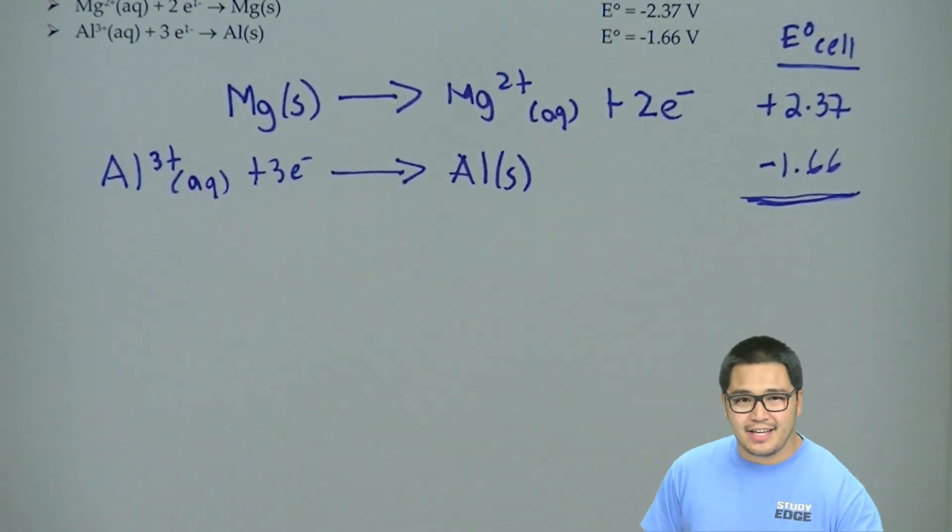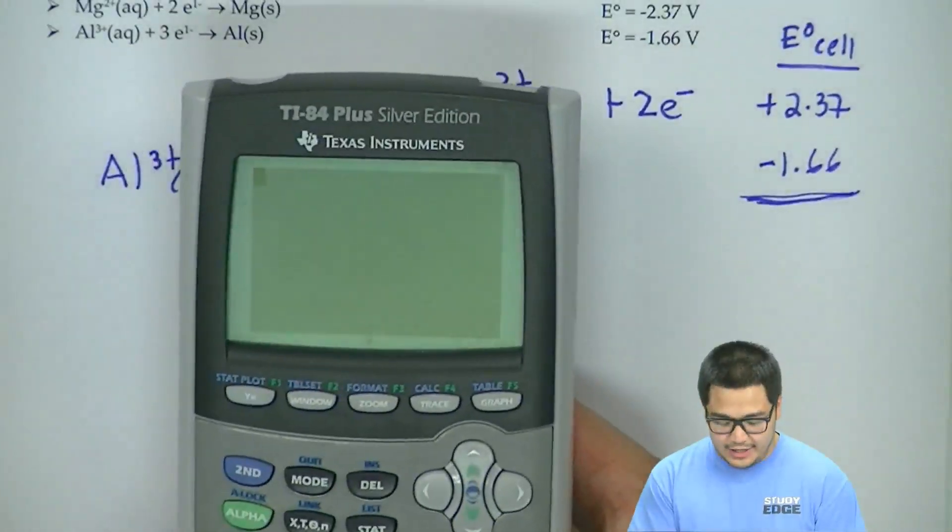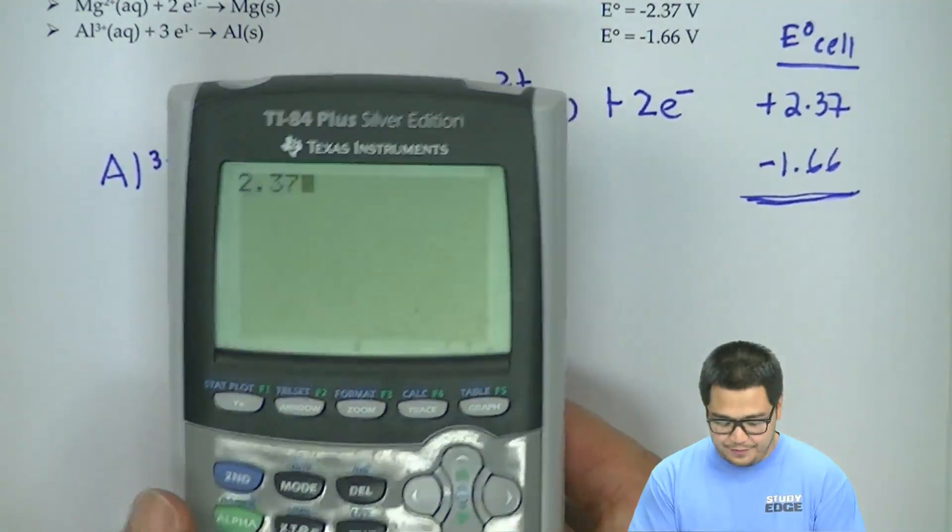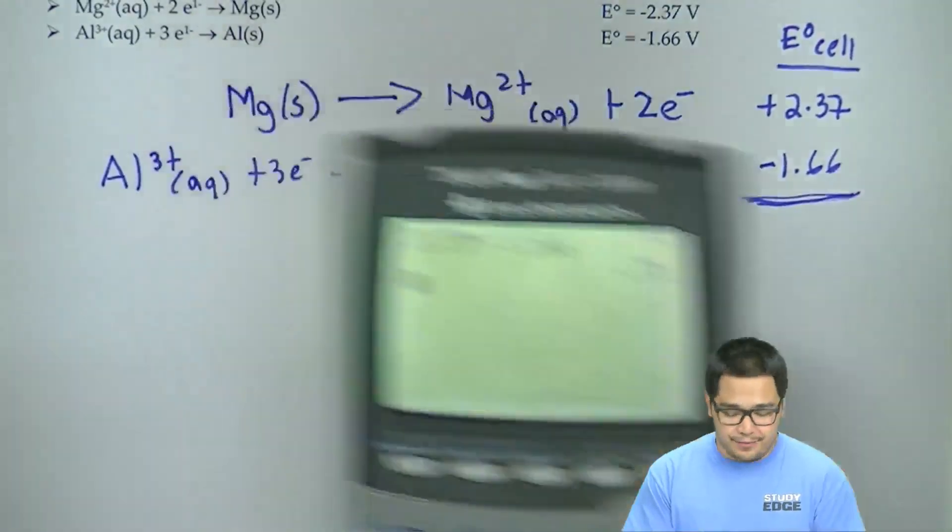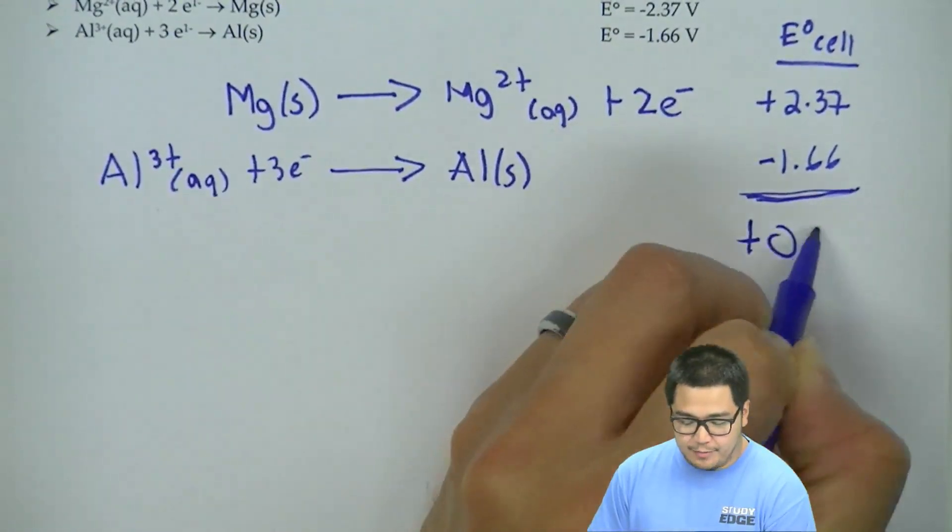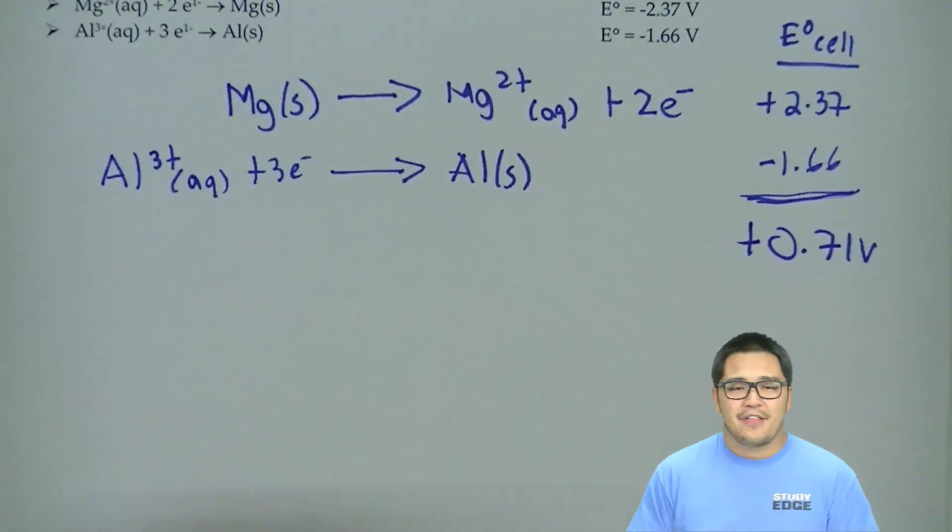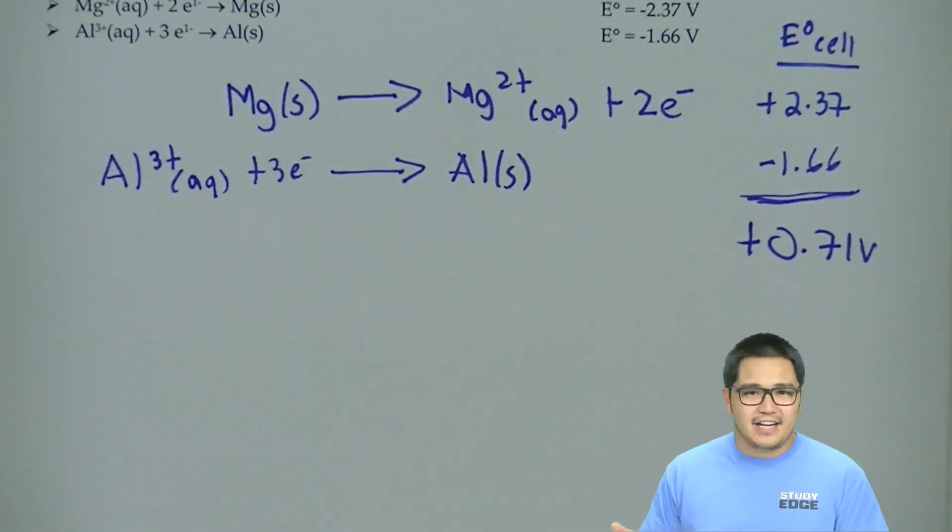And we do a short calculation, and that will tell us what our E-naught value is. So we got positive 2.37 plus negative 1.66. We add them, and we're going to get there a positive 0.71 volts. That is going to be our E-naught cell.